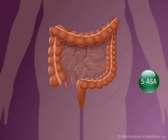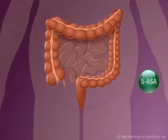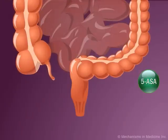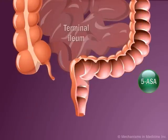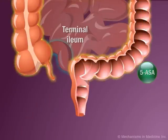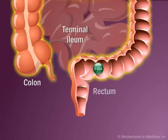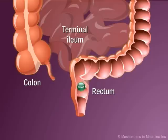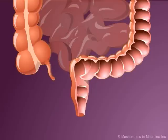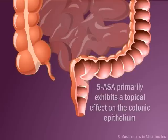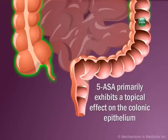5-ASA is poorly absorbed by the intestines and systemic circulation. Thus, most remains in the terminal ileum and colon or is passed in the stool. 5-ASA within the lumen primarily exhibits a topical effect on the colonic epithelium.